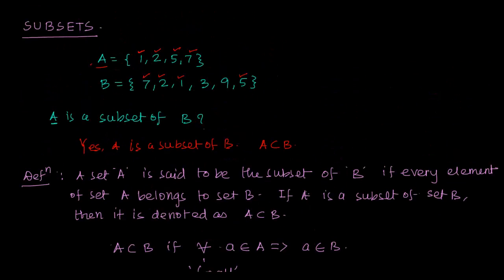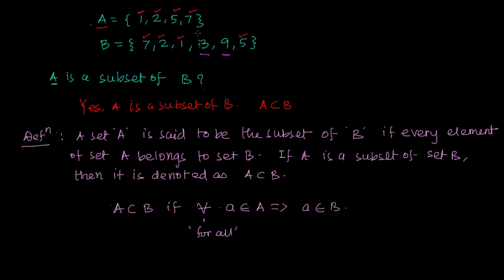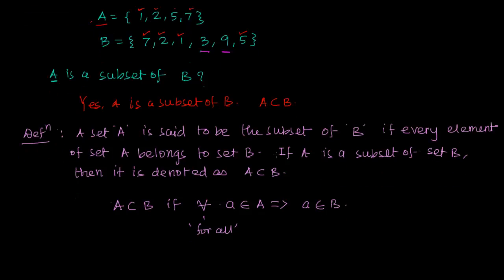Now, the definition in mathematics is absolutely precise. Sometimes there is confusion about whether there should be any more elements in B. Yes, that is allowed. For example, elements 3 and 9 here do not belong to A — they are extra — but the definition is absolutely silent about it.